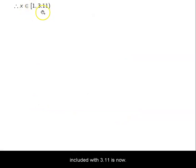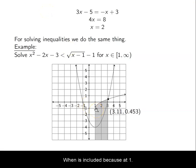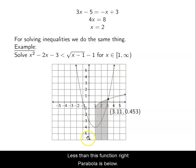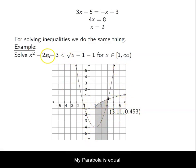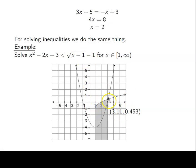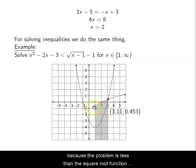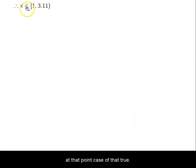Notice that 1 is included but 3.11 is not. At x = 1, the parabola is below the square root function and we're allowed to plug 1 into both equations, so 1 is included. However, at 3.11, the parabola is equal to the square root function — it's not strictly less — so 3.11 gets an open bracket. The true interval is from 1 up to, but not including, 3.11.